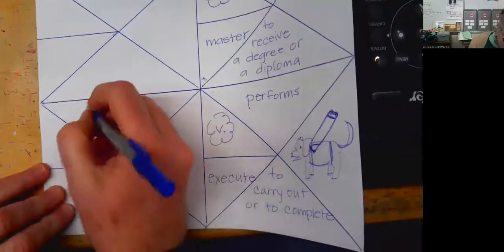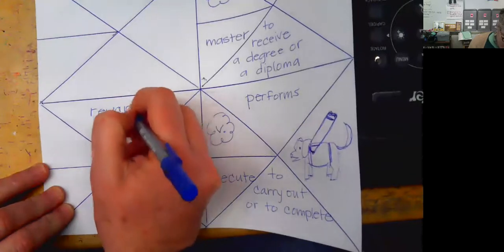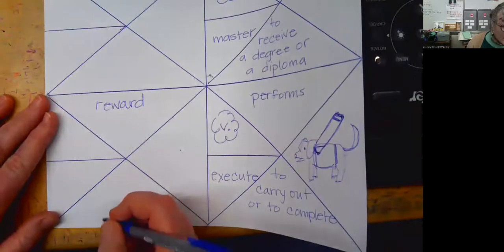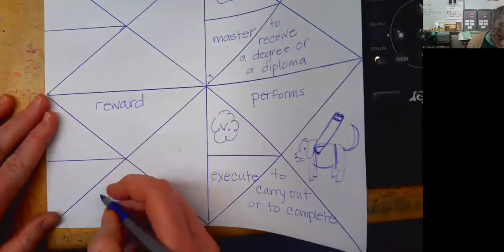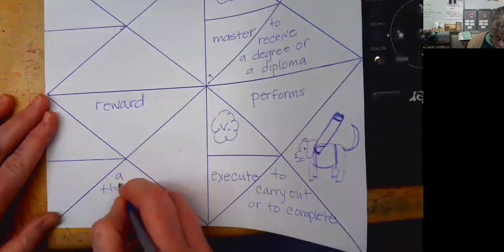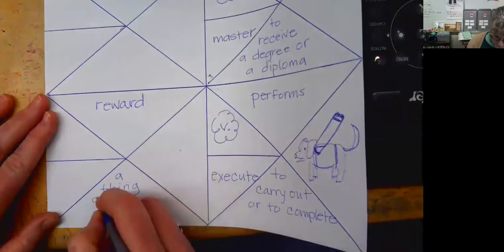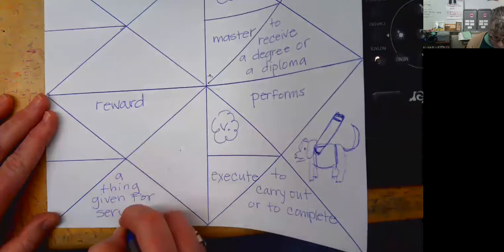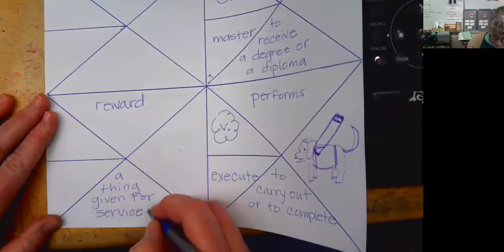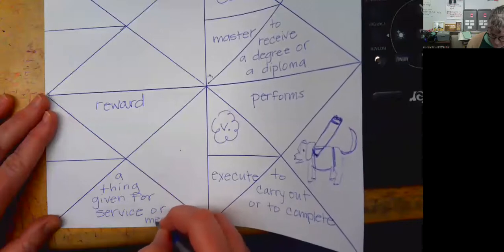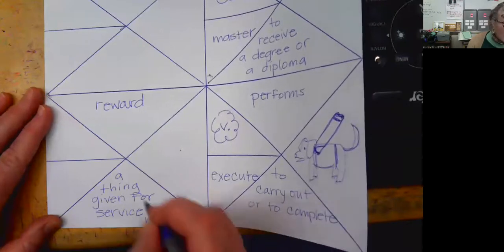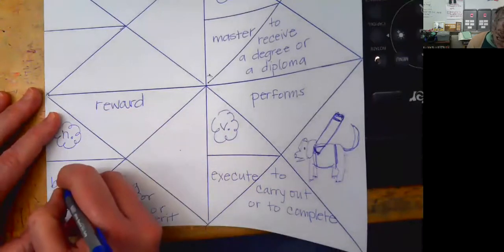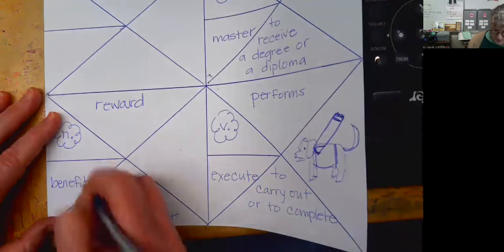The next word is reward. Obviously, if you're training a dog, you're going to give them a reward if they do something that you want them to do. So a reward is a thing given for service or merit. And it is a noun. And benefit is the synonym that I found.